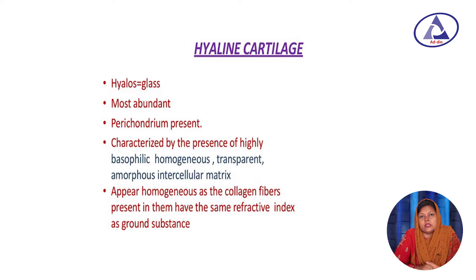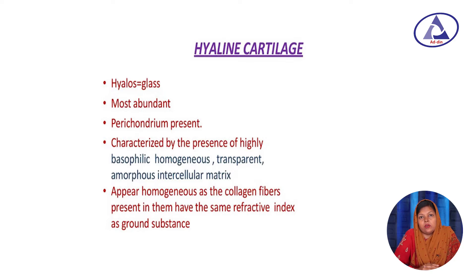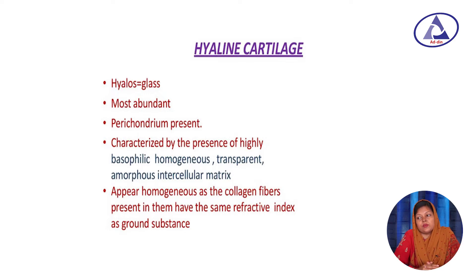In this class we will focus on hyaline cartilage. 'Hyaline' means glass — it is the most abundant cartilage in the body, and perichondrium is present in hyaline cartilage. Regarding cells: chondrocytes and chondroblasts are present, with chondrocytes arranged in isogenous aggregates located in lacunae. Regarding fiber: hyaline cartilage consists predominantly of type 2 collagen fiber, though minor amounts of other collagen fibers may also be present. The key exam answer is type 2 collagen fiber.